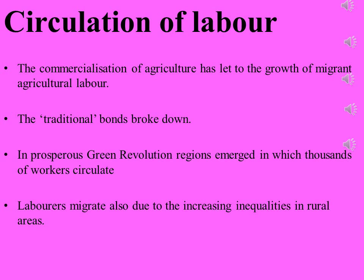The bondage — where a person who pays money creates a burden for workers — broke down as laborers shifted to free wage labor, that is, daily earning labor. In green revolution regions such as Punjab, a pattern of seasonal migration emerged in which thousands of workers circulated between their home villages and more prosperous areas where there is more demand for labor and higher wages.